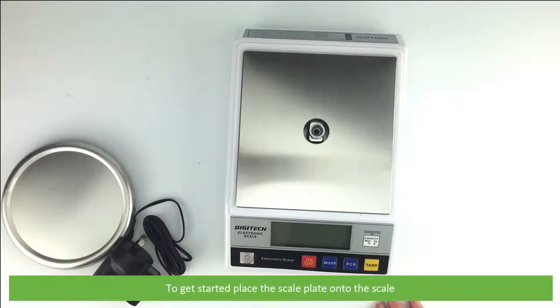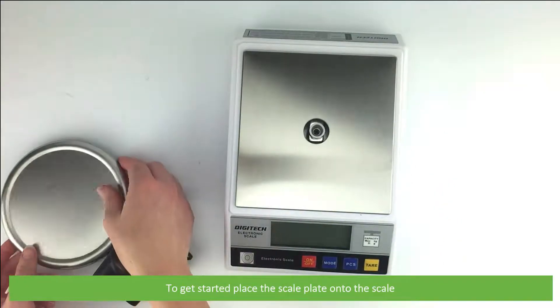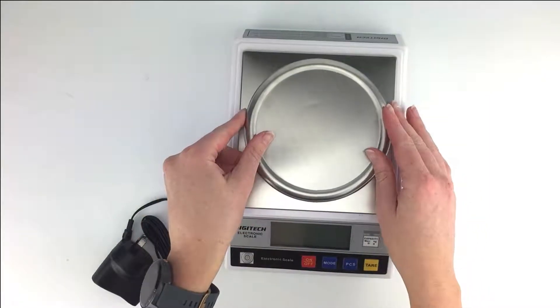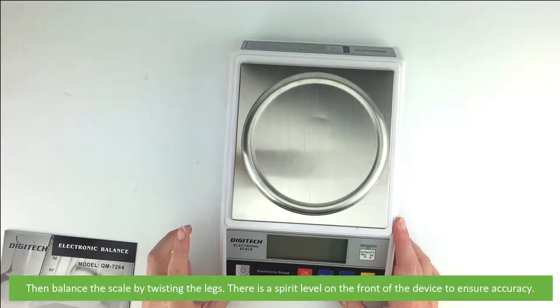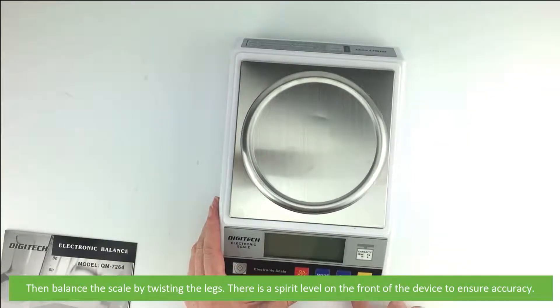To get started, place the scale plate onto the scale. Then balance the scale by twisting the legs. There is a spirit level on the front of the device to ensure accuracy.